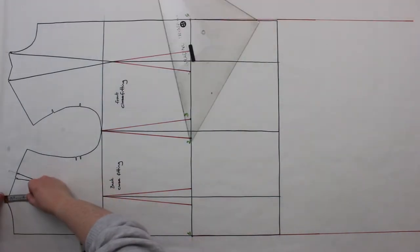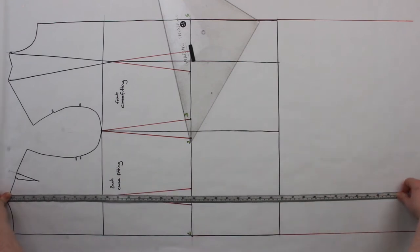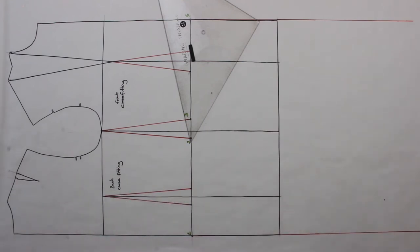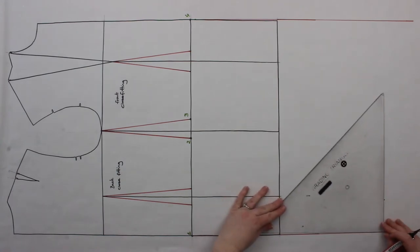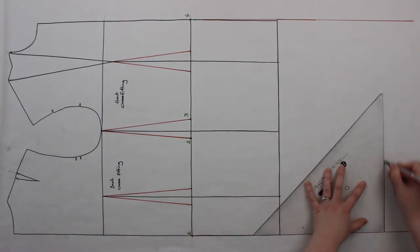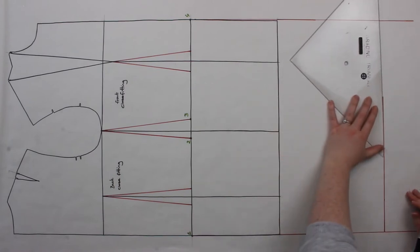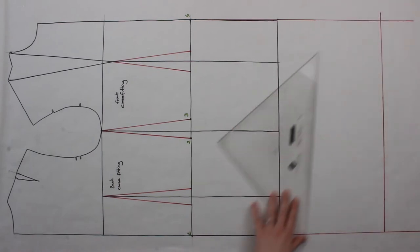Taking your measuring tape from the highest point of the pattern, which is the top of the shoulder, you're going to measure down the chosen length of your dress. At this point, you're going to square across and mark in points 5 and 6 on the lines that you've drawn down from 1 and 4.